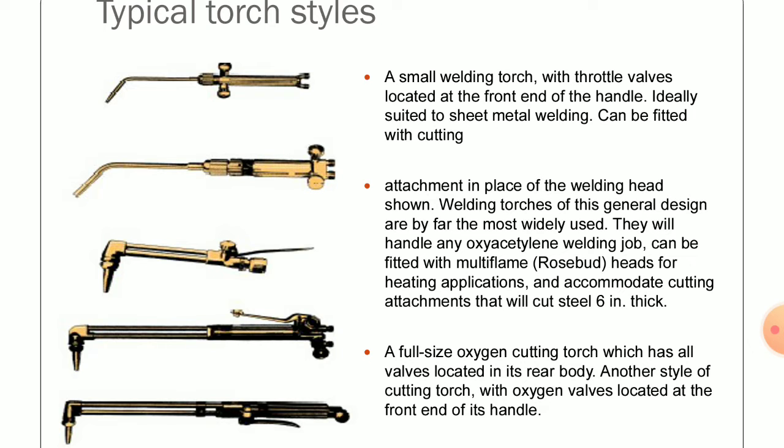Let us look in more depth at those typical types of torches. A small welding torch with throttle valves located at the front end of the handle is ideally suited to sheet metal welding and can be fitted with a cutting attachment. The regulating valves are located right before the mixing chamber, and adjacent to those valves there must be a mixing chamber. Through the length of the torch and the nozzle, better mixing of both gases is achieved.